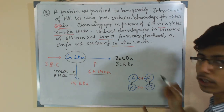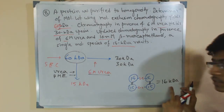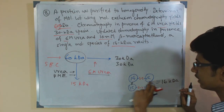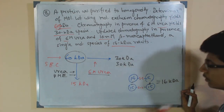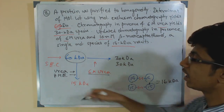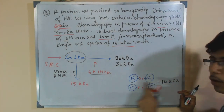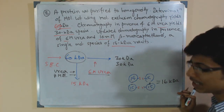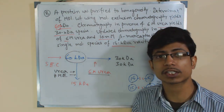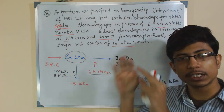So this is the whole structure of the 60 KD protein. If we treat with only urea, those non-covalent interactions are broken and we get 30 KD each. If we use urea along with BME, the disulfide bridges are also broken and we get 4 subunits of 15 KD each — so 4 × 15 KD = 60 KD total. That's how you understand the protein structure from this type of question.